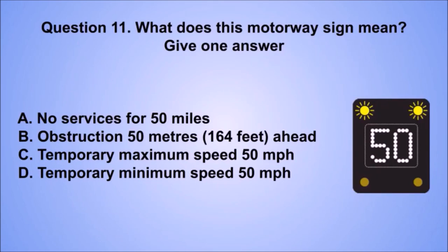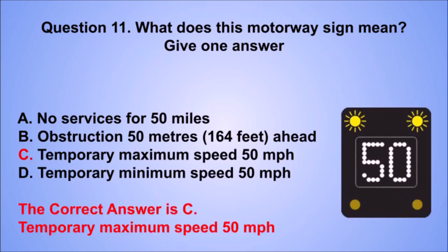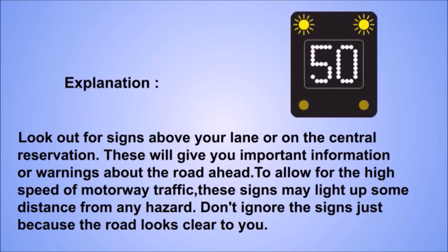Question 11. What does this motorway sign mean? The correct answer is C: Temporary maximum speed 50 miles per hour. Look out for signs above your lane or on the central reservation — they give important information about the road ahead. Don't ignore the signs just because the road looks clear to you.